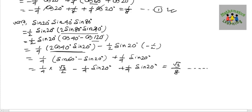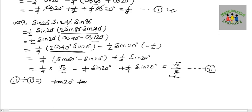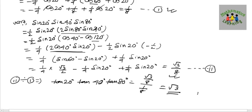So we have proved the second identity. Now combining the two results: sin value divided by cos value gives tan. sin/cos = tan. So tan20° × tan40° × tan80° equals (√3/8) ÷ (1/8) = √3. So we have proven all three identities, with the final answer being √3.